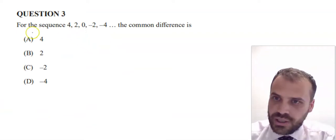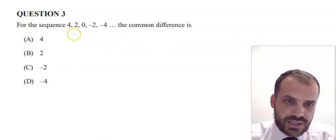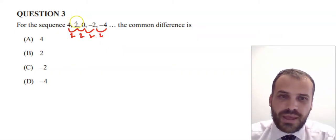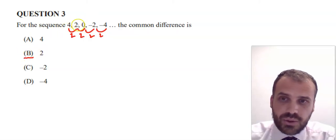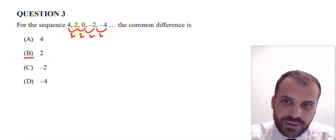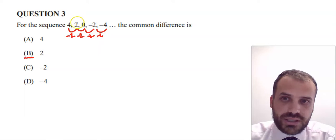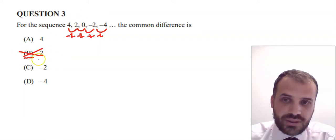Question three has a bit of a trick. For this sequence, the common difference is the difference between each number. From 4 to 2 there's a difference of 2, and from 2 to 0 there's a difference of 2. It's going to be tempting to say the answer is B, but look — the sequence is moving down. The common difference isn't 2; it's negative 2, negative 2, negative 2. We're subtracting 2 from each term to get the next term.